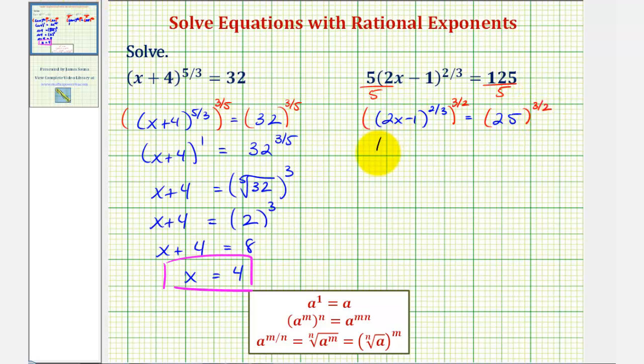So now we have the quantity 2x minus 1 raised to the power of two-thirds times three-halves. That would be 6-6 or just 1. On the right side, we have 25 raised to the three-halves power. The quantity 2x minus 1 to the first is just 2x minus 1 equals,